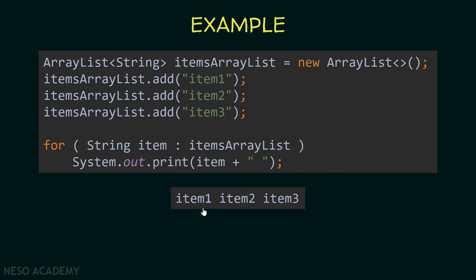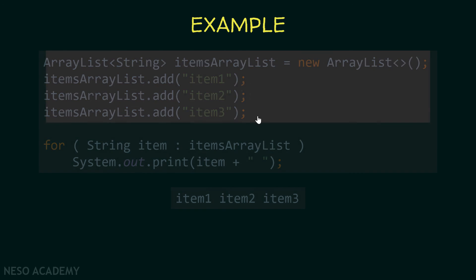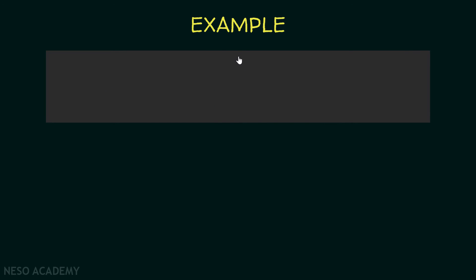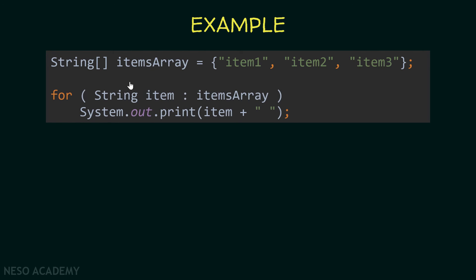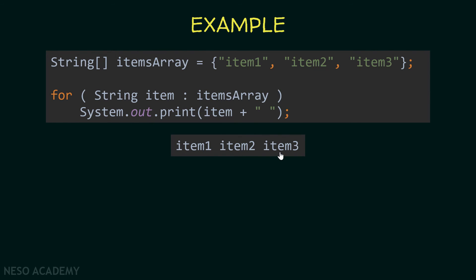This will be the output of this program. As you can see, it is easier to iterate over the array list and you are not using an index. Now let's see how we can iterate over an array. This is our array called items_array. We do the same thing — declare a string called item, iterate over the array, and each time print item concatenated with a space. This will be the output: the items inside our array.